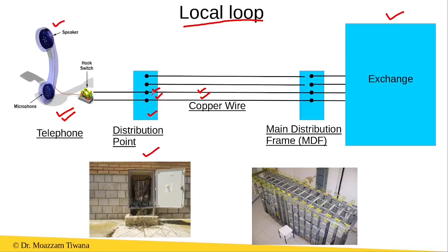Using one of these pairs of copper wire, we connect the telephone — like here we have connected the telephone to this pair of copper wires. On the exchange side, this pair of copper wires is connected to the exchange using the main distribution frame, and this is the diagram of the main distribution frame.